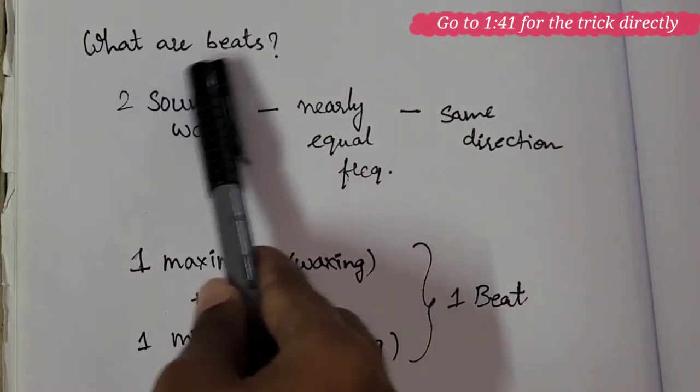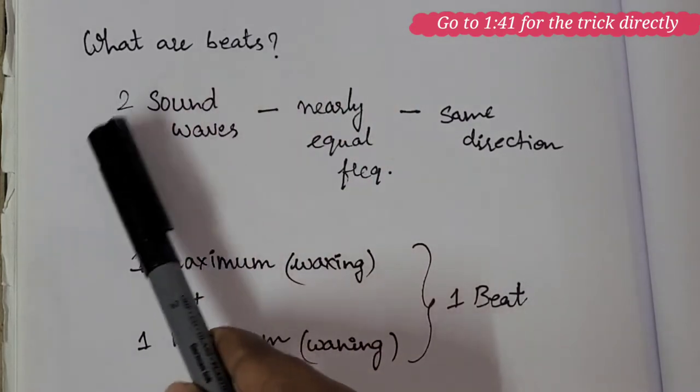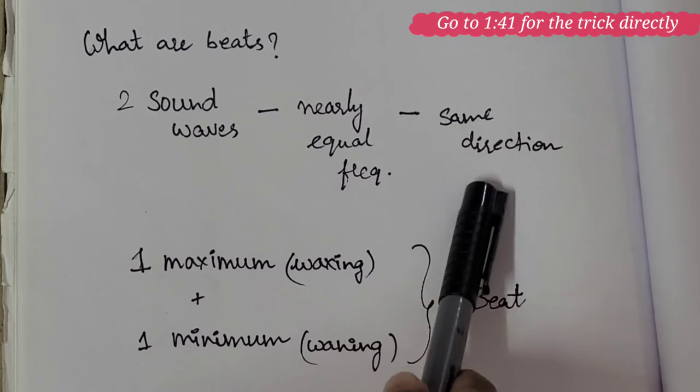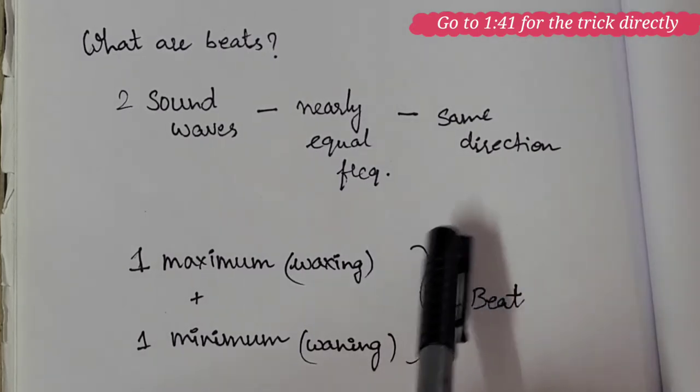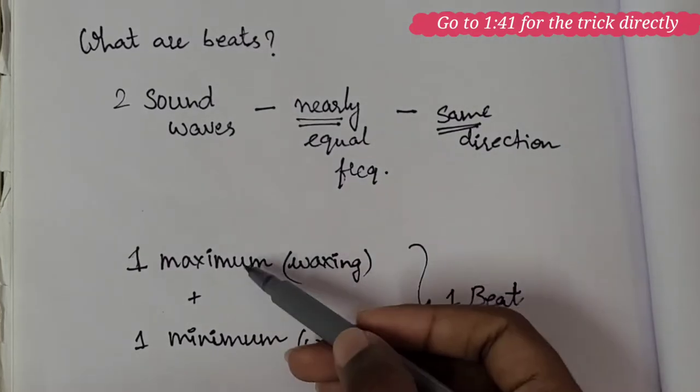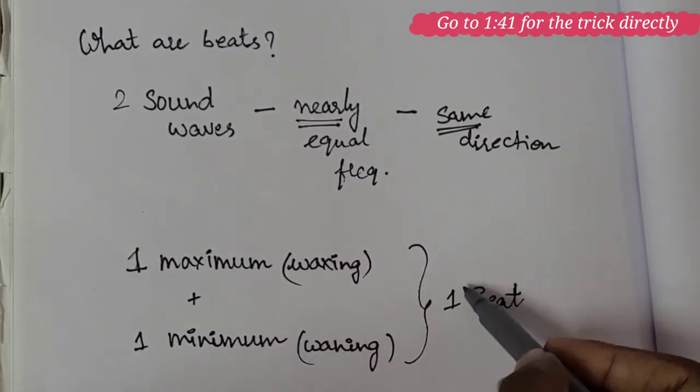First, let us see what is meant by beats. When two sound waves of nearly equal frequencies moving in the same direction superimpose, then sound intensity varies from maximum to minimum. So, one maximum and one minimum constitute a beat.